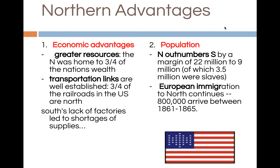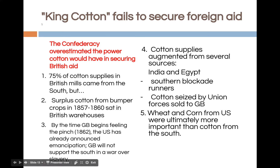King Cotton fails to secure foreign aid. The South counted on foreign intervention to win the war. The common people of Britain supported the North, hoping to extinguish slavery. Britain restrained its own and French ironclads from breaking the Union blockade. British manufacturers depended on Southern cotton, but from 1857 to 1860 a surplus of cotton had developed in Britain, allowing it to function without purchasing cotton from the South. In 1861, the cotton supply ran out and many British factory workers were laid off. As Union armies penetrated the South, they sent cotton to Britain. King Wheat and King Corn, produced in great quantities in the North, proved more powerful than King Cotton, so Britain wasn't willing to break the blockade.